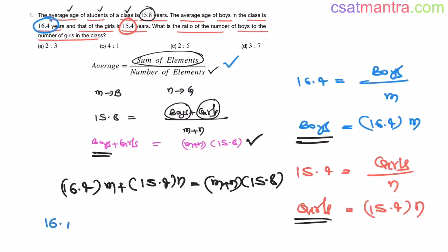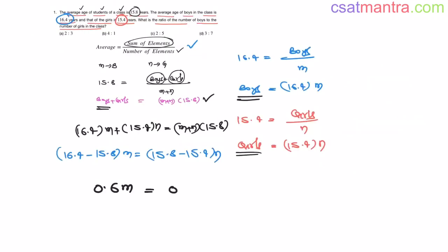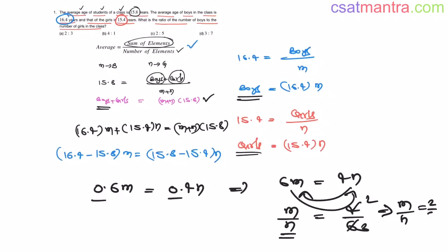Now let's substitute these values in this equation. Sum of ages of boys is 16.4 m, sum of ages of girls is 15.4 n. This equals m plus n into 15.8. Now this is 16.4 minus, bringing all m terms left side and n terms right side. This is 0.6 m, this is 0.4 n. I am writing it as 6 m equals 4 n, point point. Decimal will cancel out on both sides.